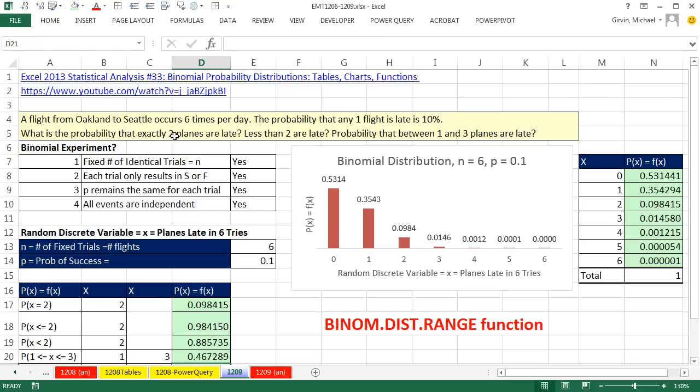A flight from Oakland to Seattle occurs six times per day. The probability that any one flight is late is 10%, so that's from past data. What is the probability that exactly two planes are late, less than two planes are late, or the probability that between one and three planes are late? So this is the one that's going to be so much easier with this new function.